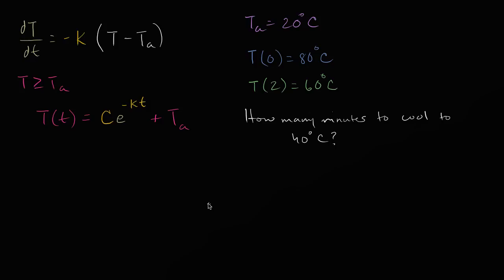I encourage you to pause the video and try to figure it out. The key is to use all of the given information to solve for the constants C and K. Once you know those, you have your model and can solve for the time that gives you 40 degrees Celsius. The ambient temperature is 20 degrees, so the ambient term in our equation is 20.